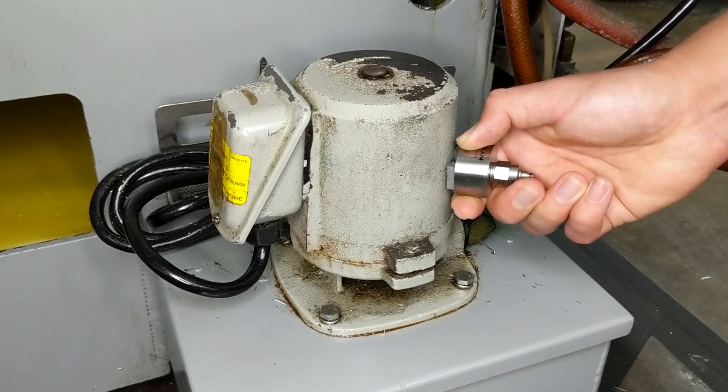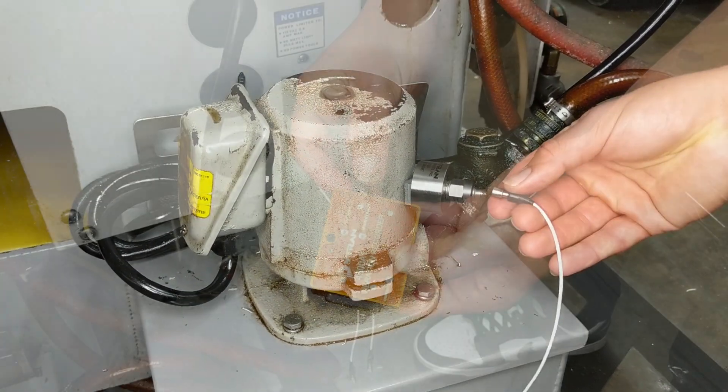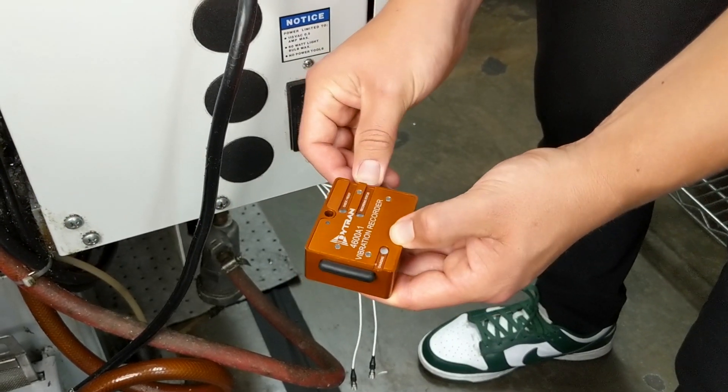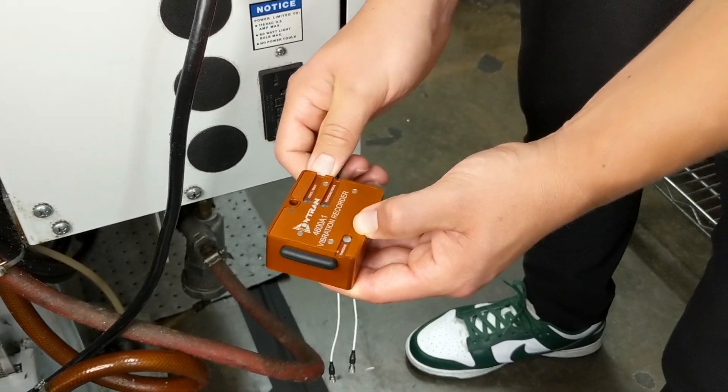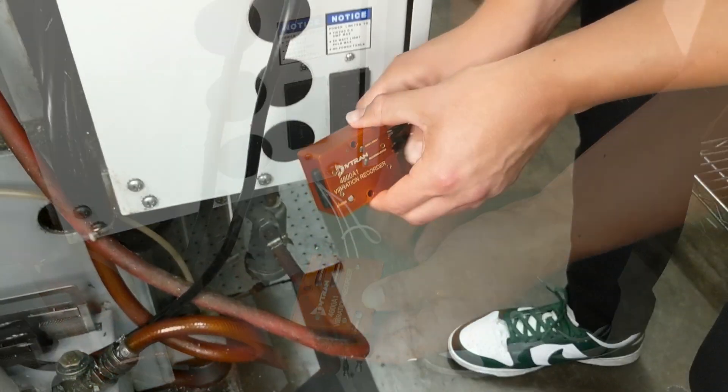To measure this vibration, we mounted general-purpose DITRAN accelerometers to each coolant pump. These accelerometers are connected to the input channels of the DITRAN 4600A1 vibrecorder to sample the recorded vibration data for each CNC machine continuously for the duration of one week.